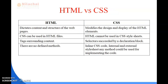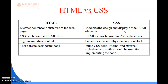Let's see the difference between HTML and CSS. Both are used for web page designing, but what are the basic differences? In HTML, it indicates the content and structure of the web pages, whereas CSS modifies the design and display of the HTML elements. By using CSS, we can change the style of the HTML elements. CSS can be used in HTML files, but HTML cannot be used in CSS style sheets.